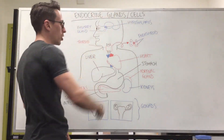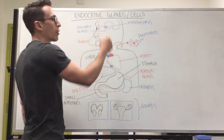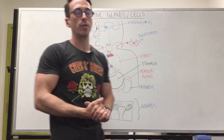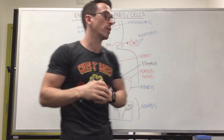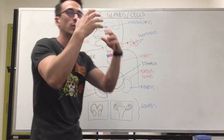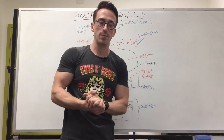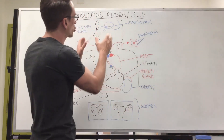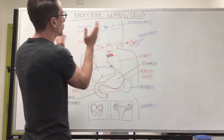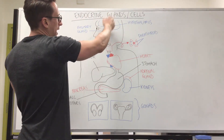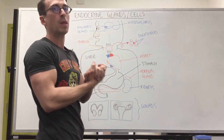So let's have a look. If we do a top-to-toe look of some of the glands and cells, firstly in the brain we've got the hypothalamus. The hypothalamus sits in a deep part of the brain and is recognized as the control center for the endocrine system. It can control the release of certain hormones from a gland that projects out and away from the hypothalamus called the pituitary gland.